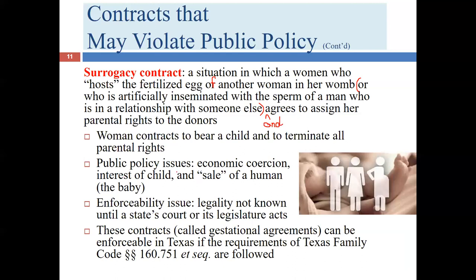In states without a statute in this area, you would look to the public policy of the state, as was done in the Baby M case. The public policy concerns are: economic coercion — the couple seeking surrogacy are often well-to-do while the surrogate may be from a lesser economic position. There's now a strong trend for this to be international, with couples going to third world countries like India where women perform the service for significantly less money and with fewer legal protections.